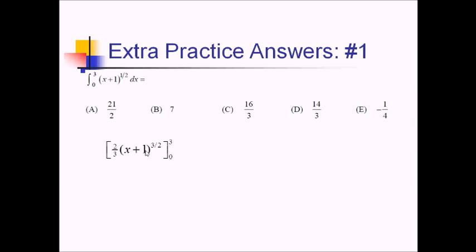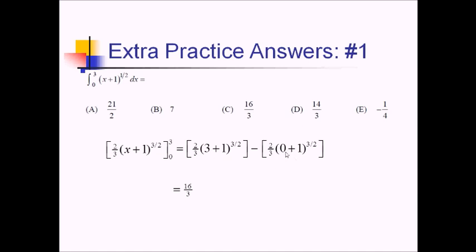I've got all this stuff with 3 plugged in, minus all this stuff with 0 plugged in. This is essentially the square root of 4 to the 3rd power, so that's 8 times 2/3, which is 16/3. Over here, 1 to whatever is just 1, times 2/3 is 2/3, so minus 2/3. That gives 14/3, which is choice D.